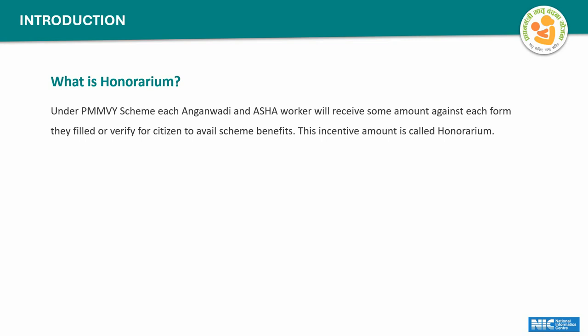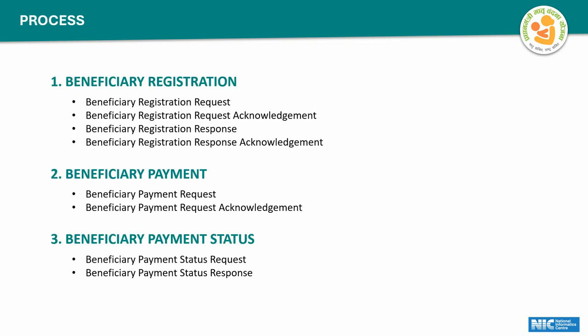We will send requests to PFMS, which will be responsible for direct benefit transfer directly into the honoraries' accounts. I am using terms as per the PFMS documentation — they always call it 'beneficiary', so here beneficiaries are the Asha and Anganwadi workers. I will also use the term 'honorary' for whoever receives the honorarium.